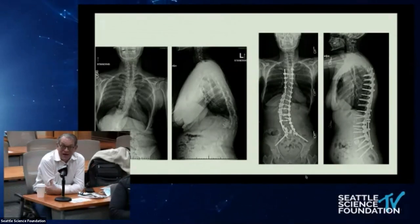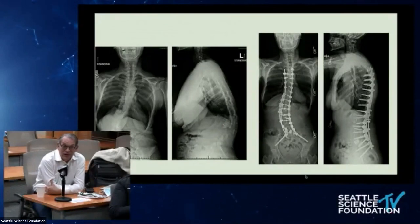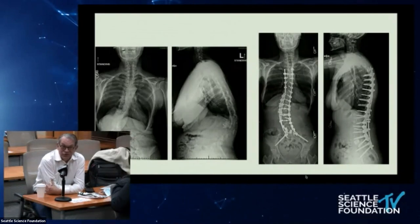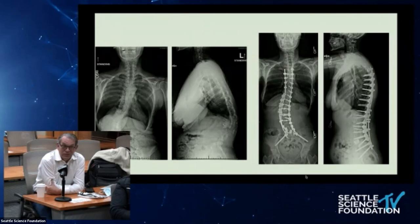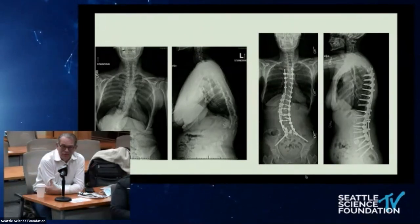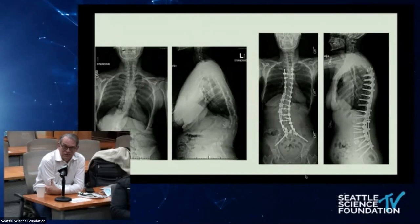For pelvic screws — SI joint fusion aside — a new screw augmentation system with an allograft product was used to augment the S1 screws with satisfactory results. A full four-rod construct was used. Chapman asks whether four rods should be routine for long constructs. Schwab responds that four screws — not four rods — are what will solve the pelvic failure issue.